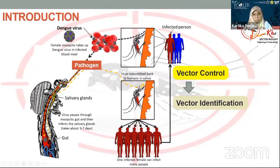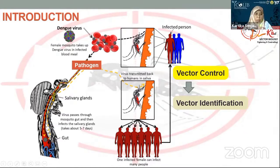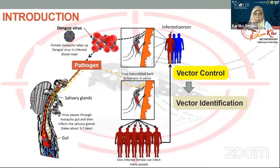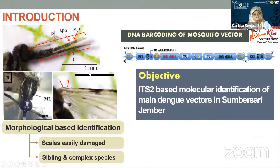High genetic variability of the vector increases the vectorial capacity to carry the dengue pathogen and to transmit the disease from one person to another. It is important to correctly identify the vector to determine its genetic variability in an endemic area.